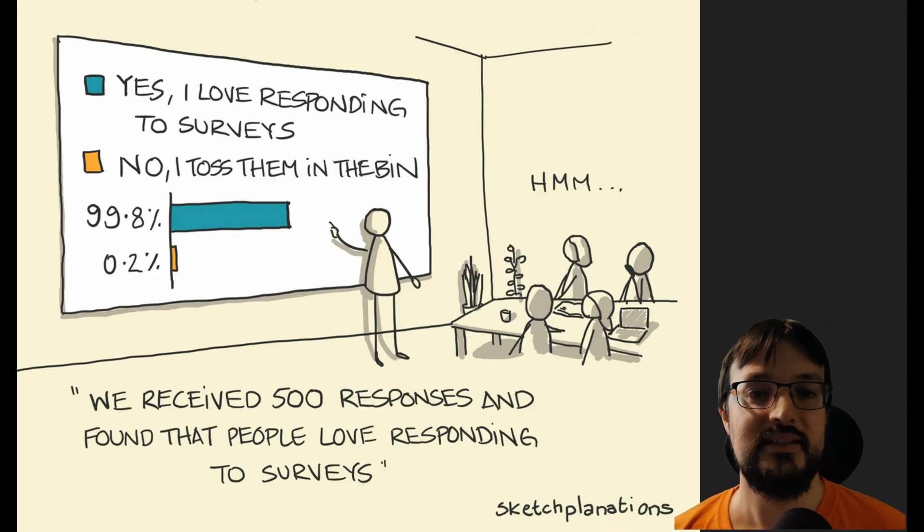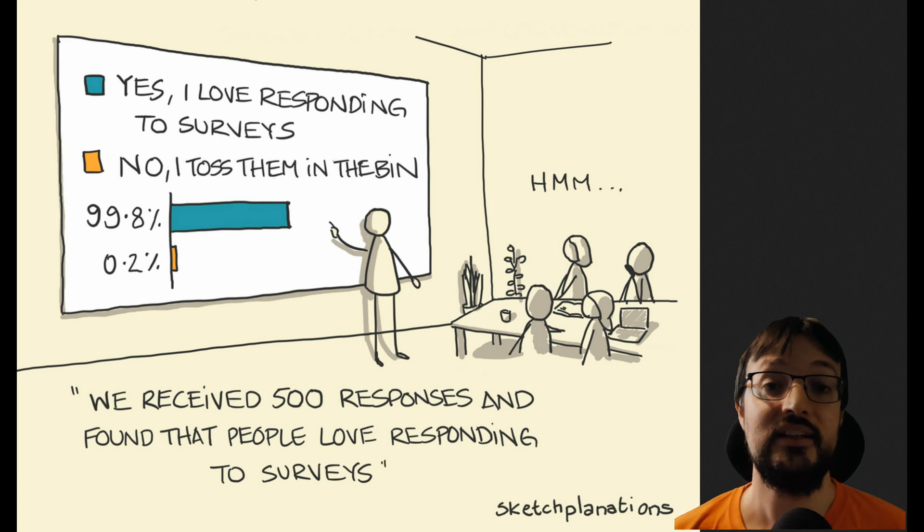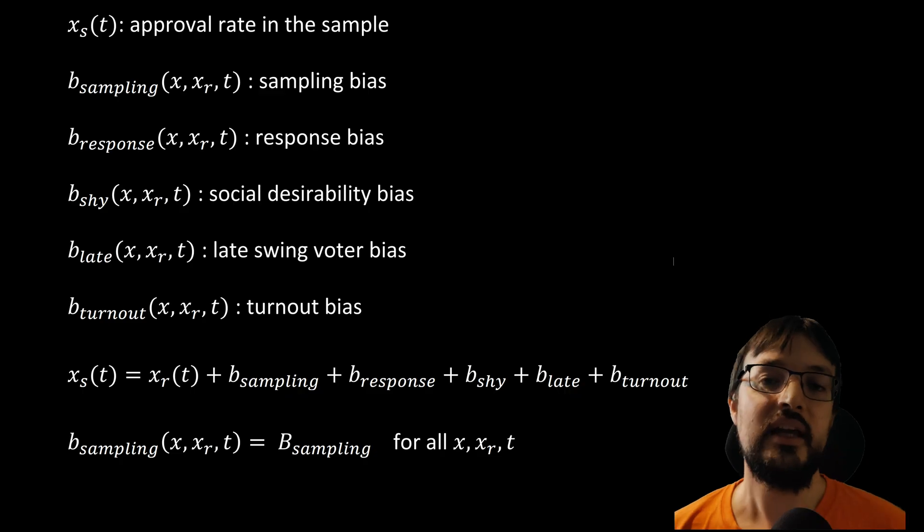Second, we have response bias. Some people don't answer polls, and response rates are lower than ever. If certain groups are less likely to answer, pollsters may miss their views entirely. We indicate response bias with a function called b_response(x, x_r, t). Again, we don't know this function.